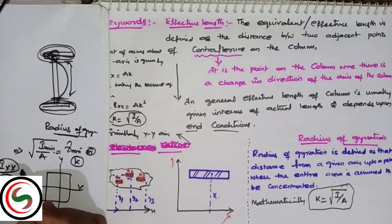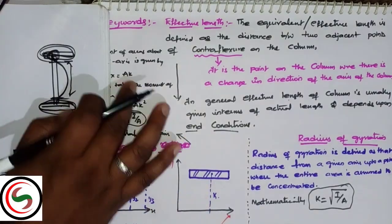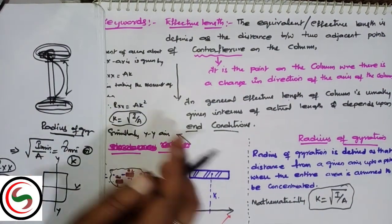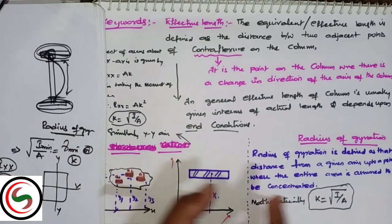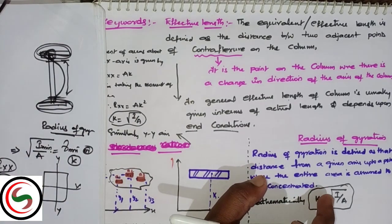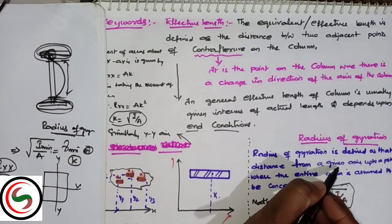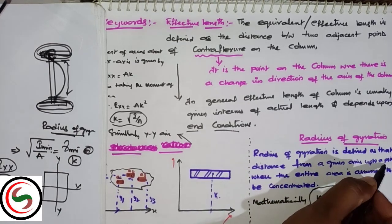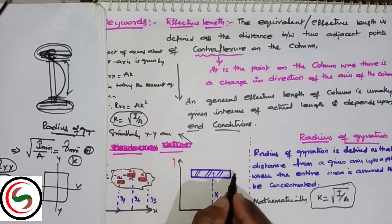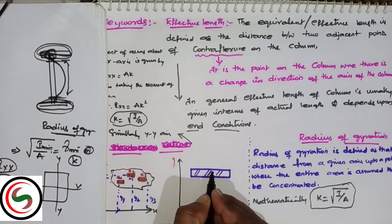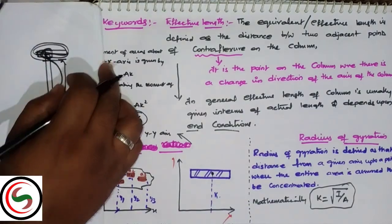It is defined as the ratio of square root of moment of inertia to that of area, which is denoted by r minimum or k. Here, r minimum and moment of inertia should be minimum. Suppose we have x-axis and y-axis, we calculate Ixx and Iyy, and we take the minimum for the total column's radius of gyration.